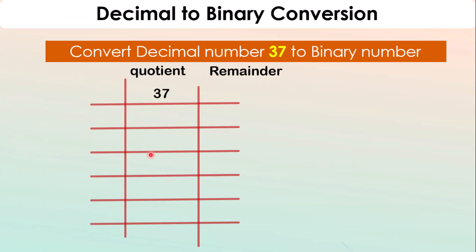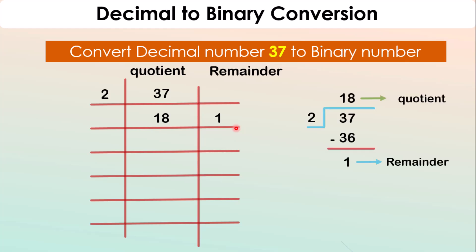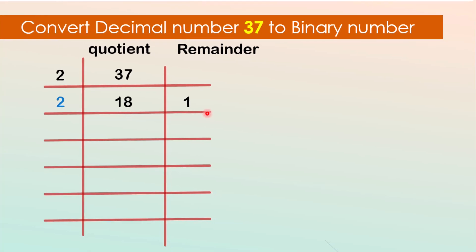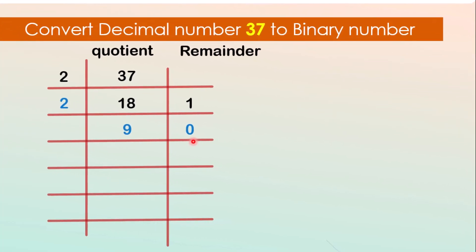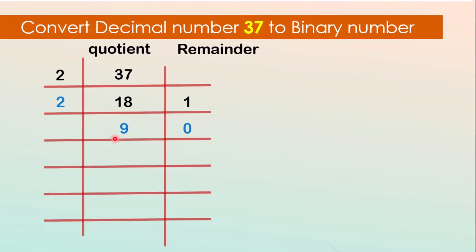This time, we will convert decimal number 37 into binary. We start by dividing 37 by 2. 37 divided by 2 gives 18 as the quotient and a remainder of 1. We write down the remainder. Next, we take the quotient 18 and divide by 2. 18 divided by 2 gives 9 as the quotient and a remainder of 0. We write down the remainder. Now, we take the quotient 9 and divide by 2. 9 divided by 2 gives 4 as the quotient and a remainder of 1. We write down the remainder.